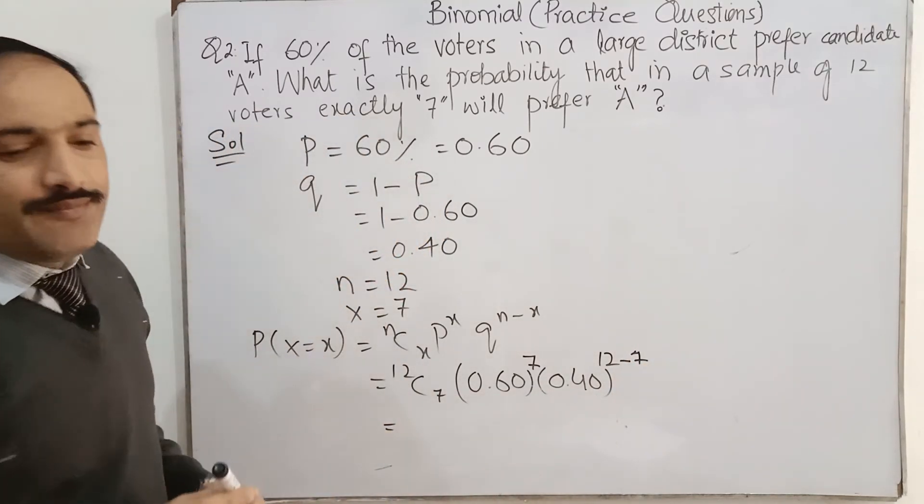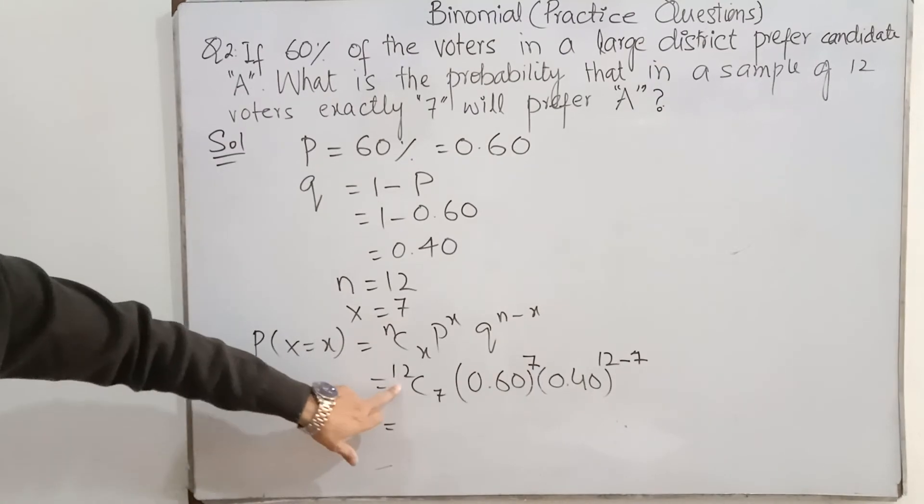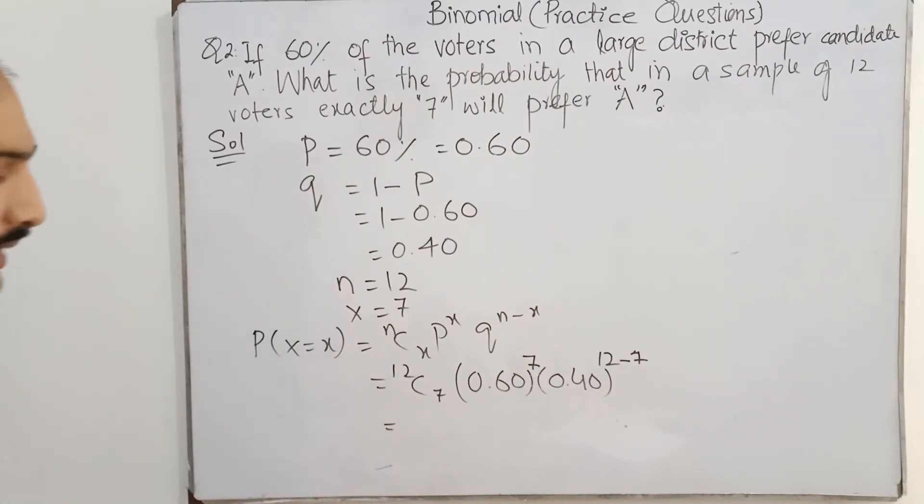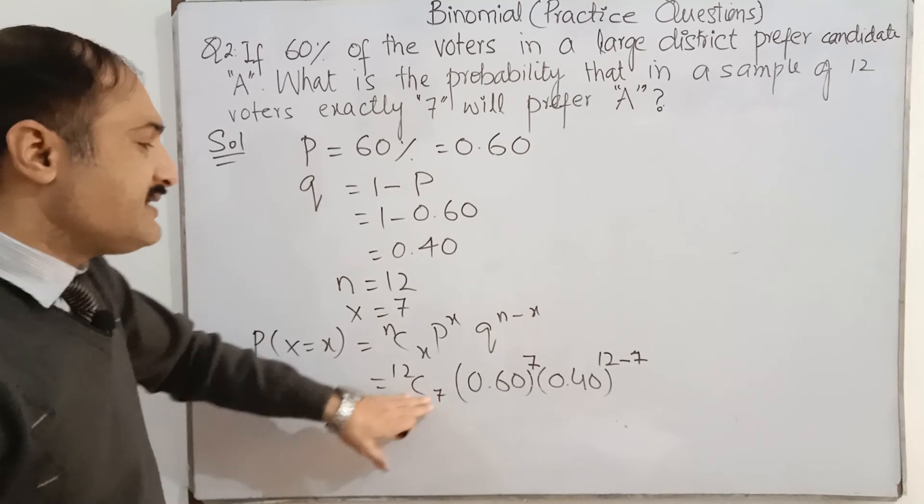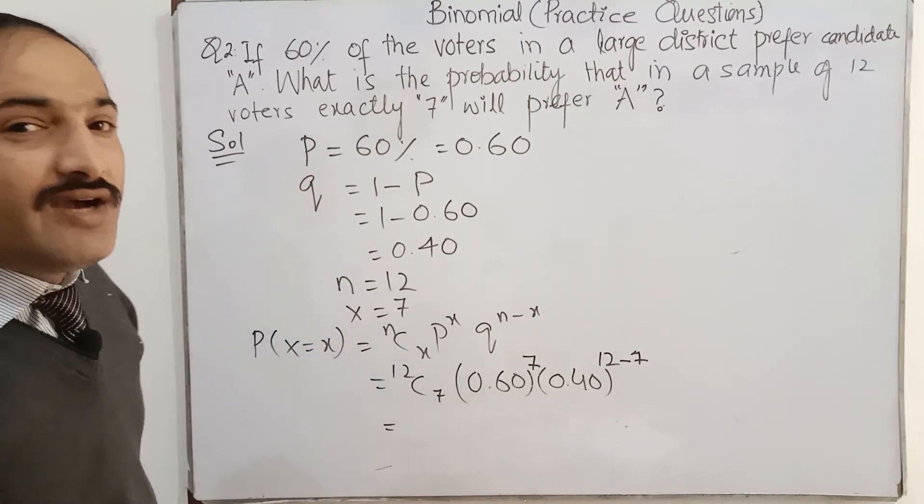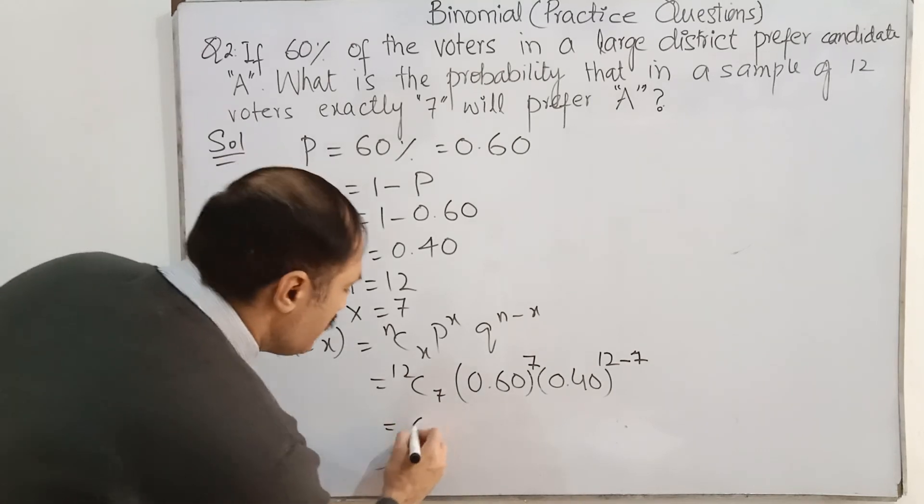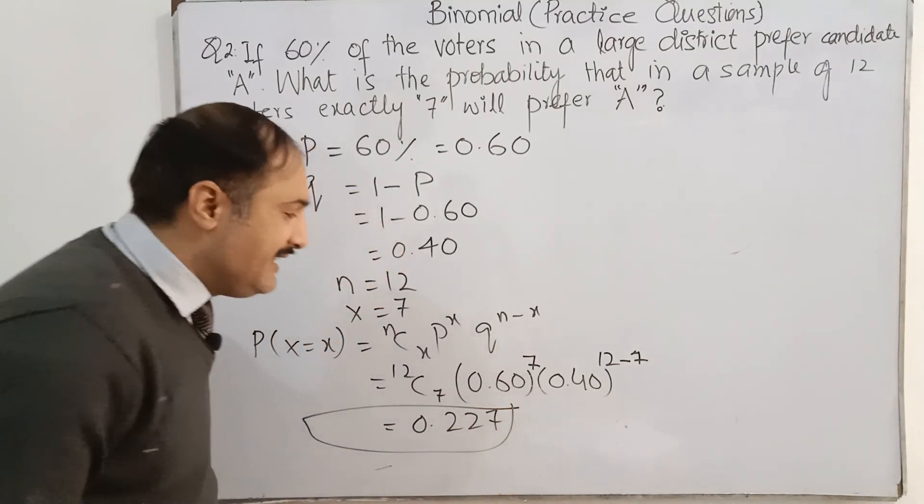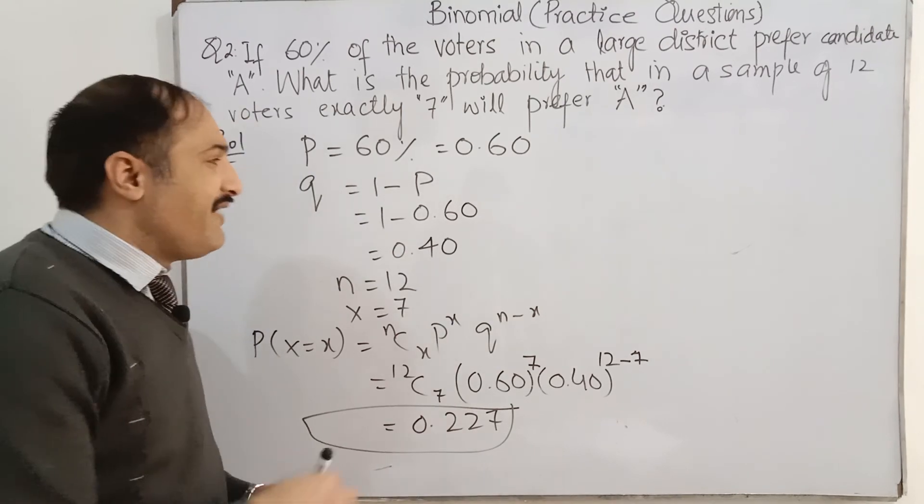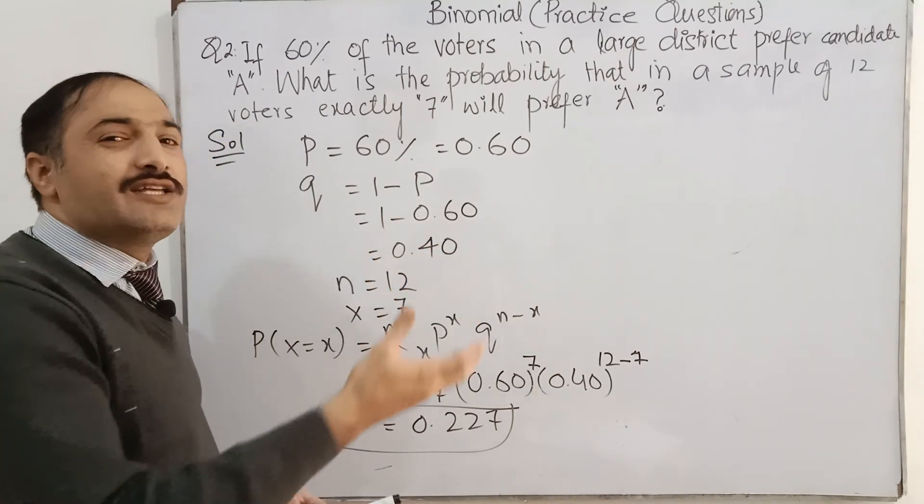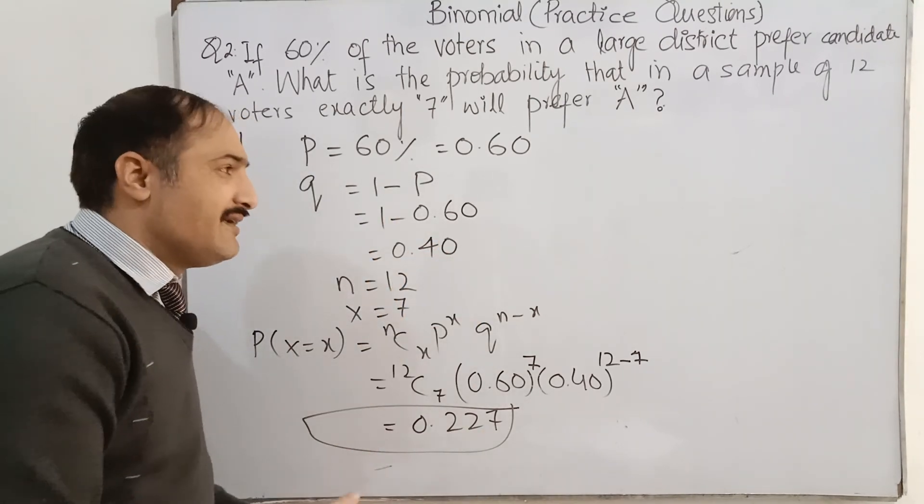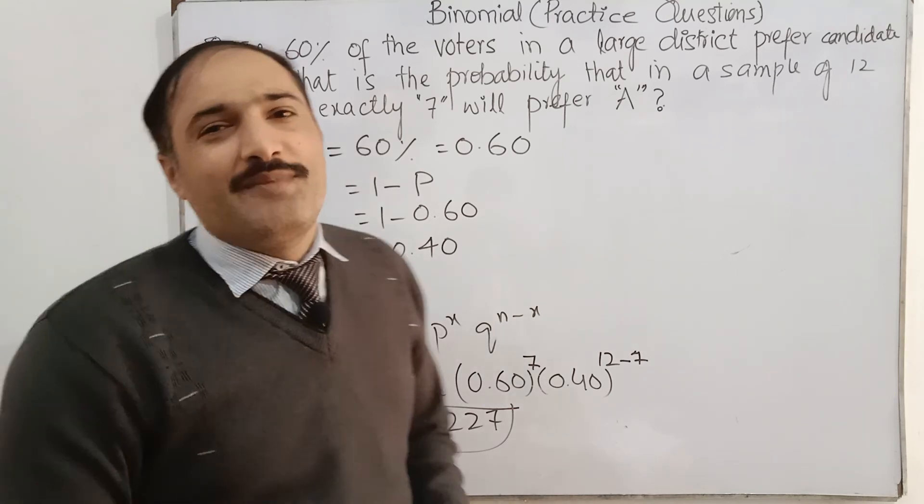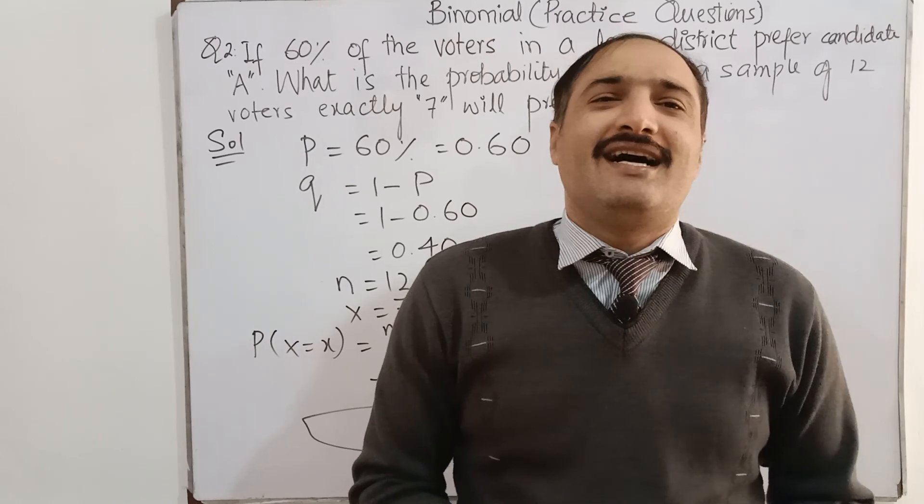So, here is 12C7. And if we will write this on the calculator, we have an answer 0.227. So, dear students, any question, if you have any doubt about this, you can write in the comment and you can ask me. And then I will write another question over there. Thank you so much. Allah hafiz. Thank you so much.